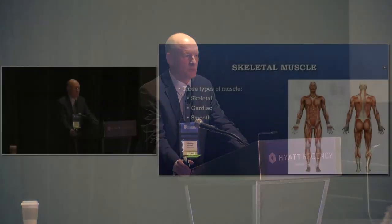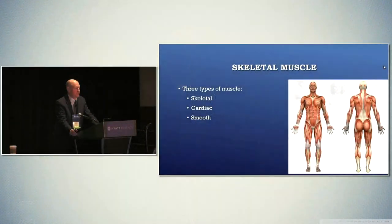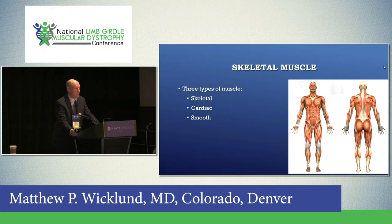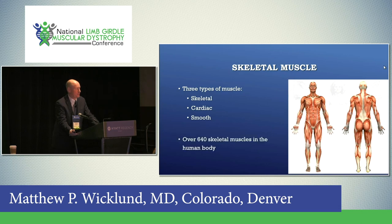I'm going to start very simple and then end a little more complex. Muscle — there are three main types of muscle, and for some of the LGMD subtypes that's important, because some have mostly skeletal muscle involvement, but they can also have cardiac muscle, respiratory muscle, and sometimes even smooth muscle. And of course, there are many muscles in the body.